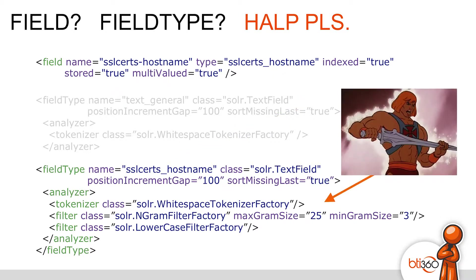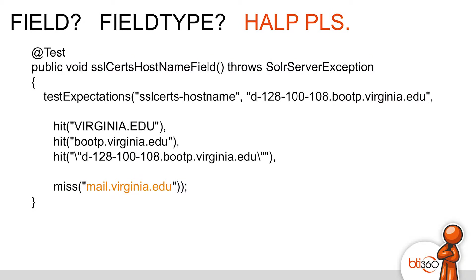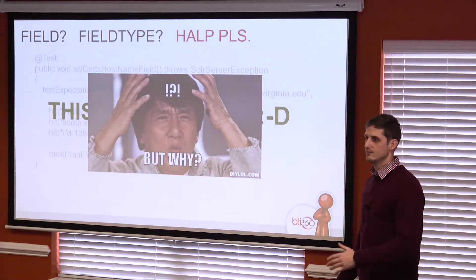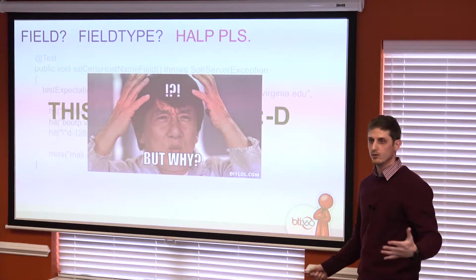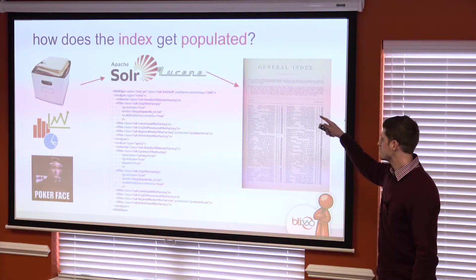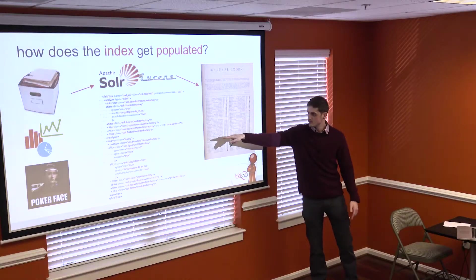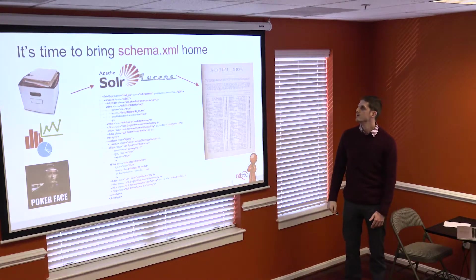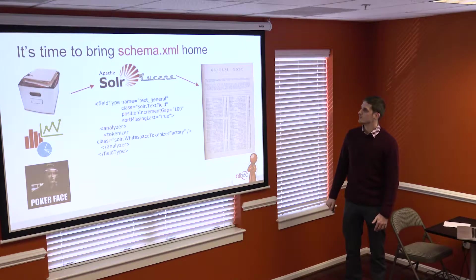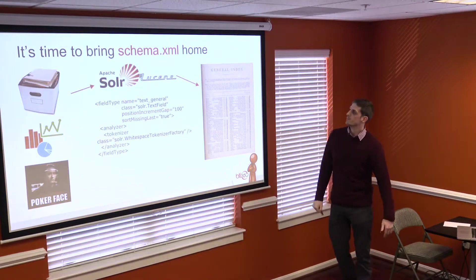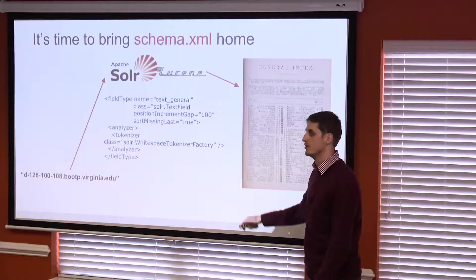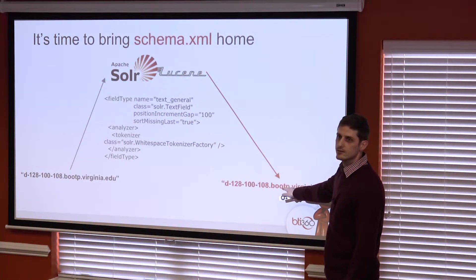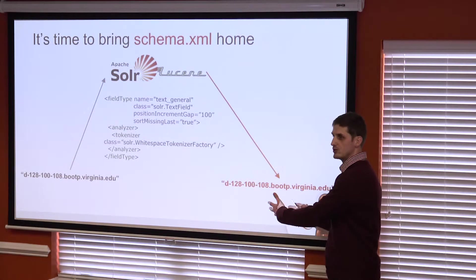This new field type has all the power — it tells the field how to act, how to think; it's the brain behind it. When we go back and run the test after changing the schema.xml file, it passes. But why? This is where I want to drive home how schema.xml works. You've got a whole bunch of data going into your index, put there via the rules — the brain behind it. We're going to index just that one SSL certs hostname field. When we create an index, this is what's in the index — just this string. There's no white space in it, so it indexes the entire thing.